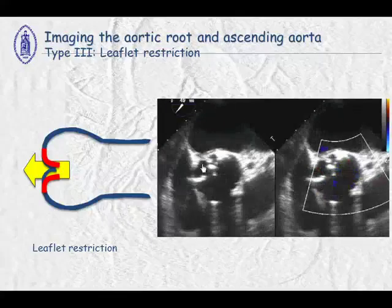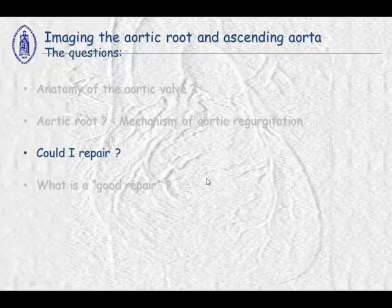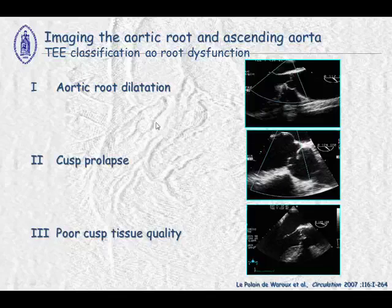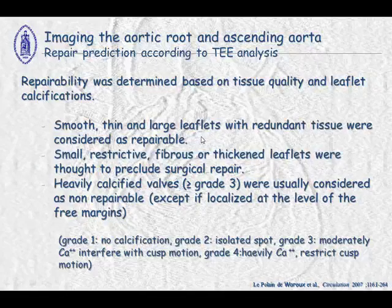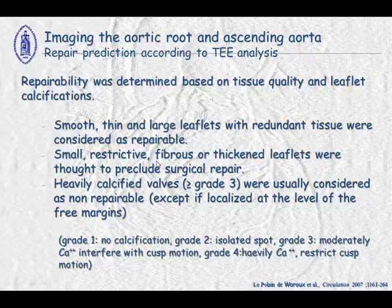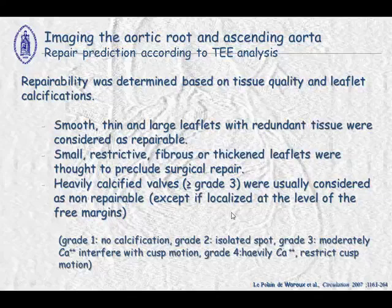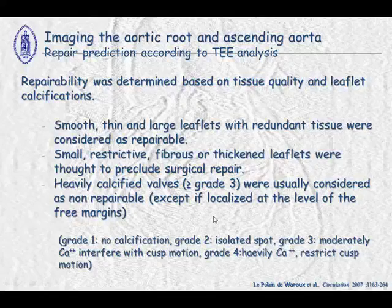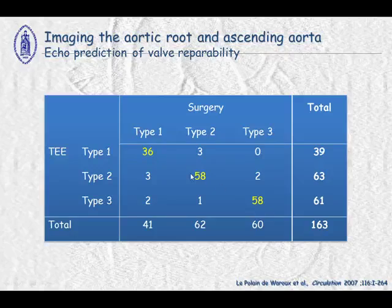Type 3 is leaflet restriction, showing a heavily calcified aortic valve. Regarding repairability, if we classify into three groups — aortic root dilatation, cusp prolapse, or poor cusp quality tissue — small, thin, large leaflets with redundant tissue are considered reparable. Small, restricted, fibrosed leaflets or those due to previous surgical repair are less suitable, and severely calcified valves are usually considered non-reparable. Can transoesophageal echocardiography correctly identify these different lesions compared to surgical inspection? We can already predict with very good accuracy what the surgeon will find.